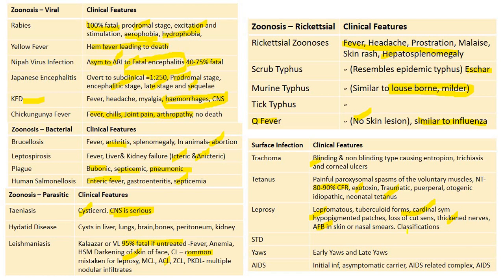Cardinal symptoms of leprosy: hypopigmented patches, loss of cutaneous sensation, thickened nerves, and acid-fast bacilli in skin or nasal smears. There are many classifications: Madrid, Indian, and bacteriological. Treatment is based on bacteriological classification into paucibacillary and multibacillary. STDs present with urethral discharge, vaginal discharge, lower abdominal pain, scrotal swelling, and inguinal buboes. AIDS presents as initial infection, asymptomatic carrier state, AIDS-related complex, and AIDS — at the AIDS-related complex stage the immune system is compromised but no opportunistic infection or cancer yet.